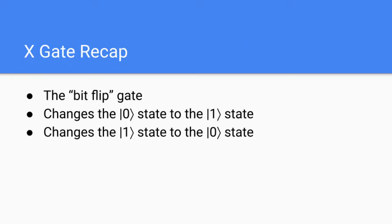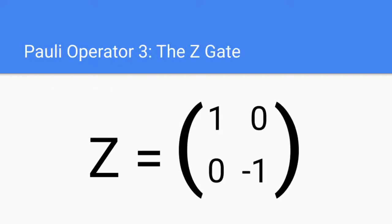Let's quickly recap what we learned about the X gate. The X gate is basically a bit flip gate. What this means is that it changes the |0⟩ state to the |1⟩ state, and the |1⟩ state to the |0⟩ state when applied to a qubit — essentially, we flip the state of the qubit. Now that we've covered the X gate, let's talk about our second Pauli operator, or second single qubit quantum gate, which is the Z gate.